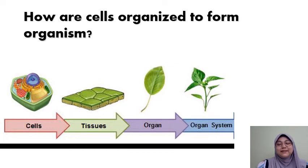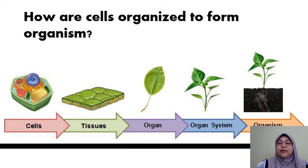Next level would be the system level. A system is formed when different organs and tissues work together to carry out a particular process. For example, the shoot and root system. And from there, the combination of that will form an organism.